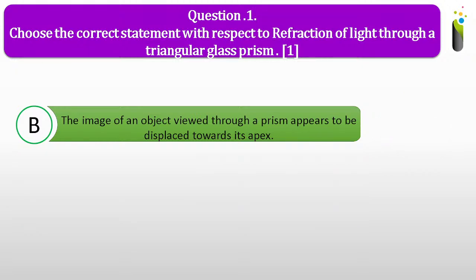So what should be the correct answer for this? The correct answer for question number one is B: the image of an object viewed through a prism appears to be displaced towards its apex.